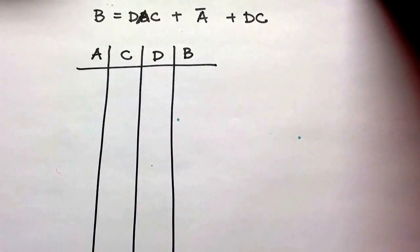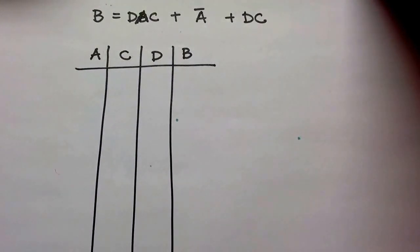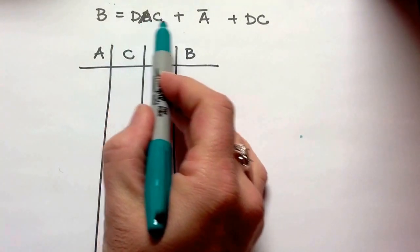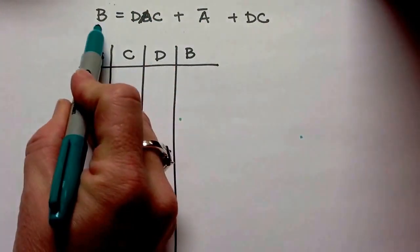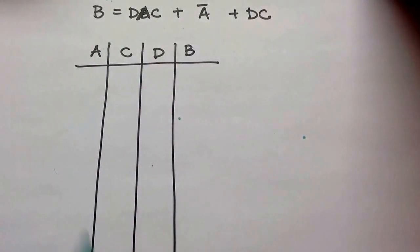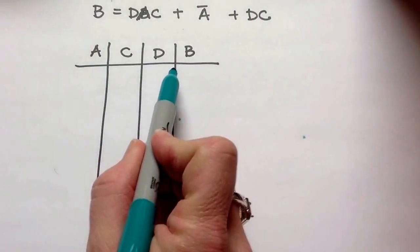So it looks like this time our equation appears to represent something that has maybe some significance. Our output is going to be equal to B. We have three inputs, A, C, and D, so I've labeled those columns on my truth table.